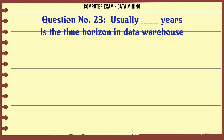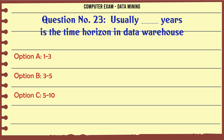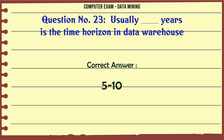Usually, how many years is the time horizon in a data warehouse? A. 1-3. B. 3-5. C. 5-10. D. 10-15. The correct answer is 5-10.